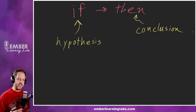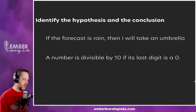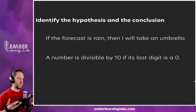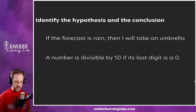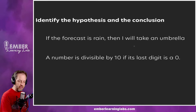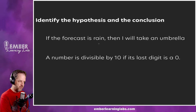Let's look at a couple of examples and identify the hypothesis and the conclusion. For the first one: if the forecast is rain, then I will take an umbrella. This one is pretty straightforward. The hypothesis is 'the forecast is rain.'